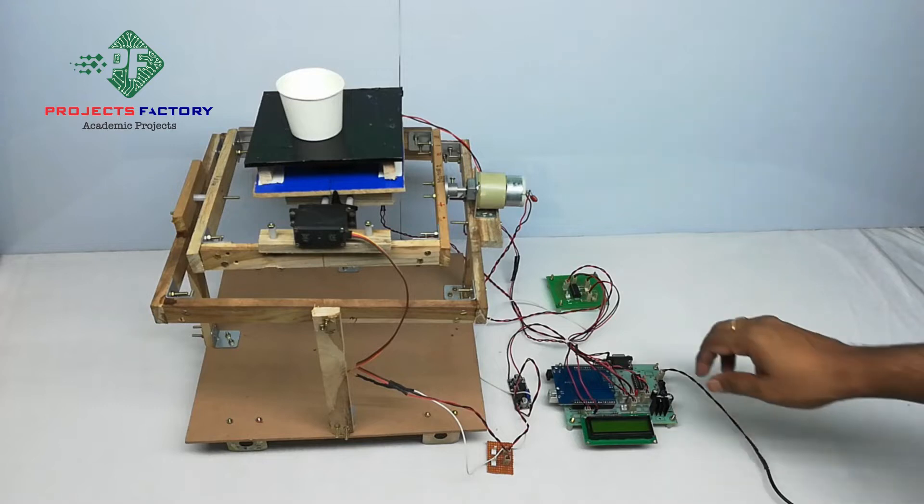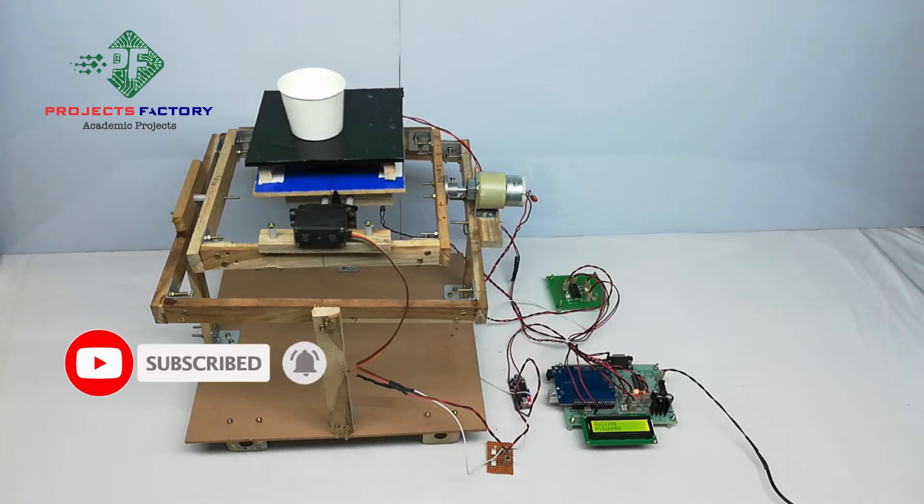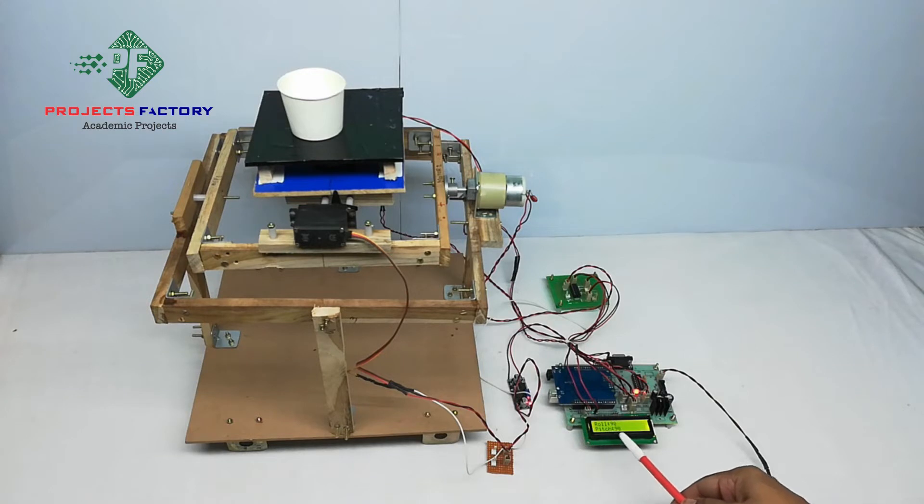Now power on. Here the MEMS sensor calculates the roll and pitch. We can consider roll as the X axis and pitch as the Y axis. We can see here on the LCD roll and pitch values.